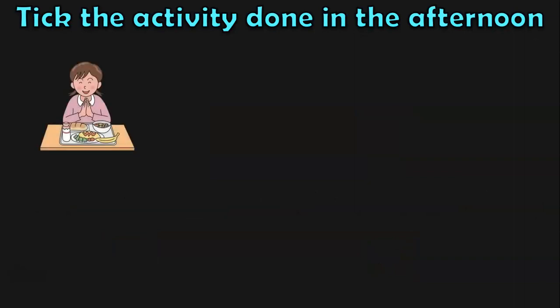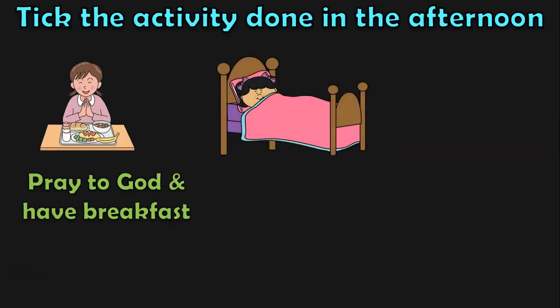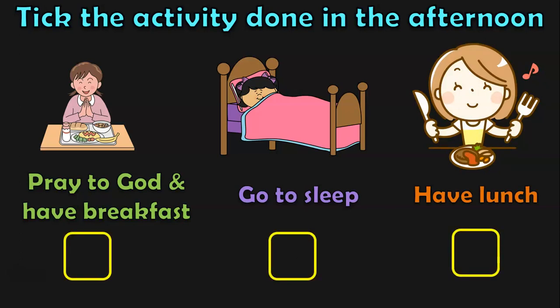Next activity: Pick the activity done in the afternoon. Here we have a child praying to God and having breakfast, another child going to sleep, and another child having lunch. Of these three, which is the activity done in the afternoon? Yes, having lunch is the activity done in the afternoon time.